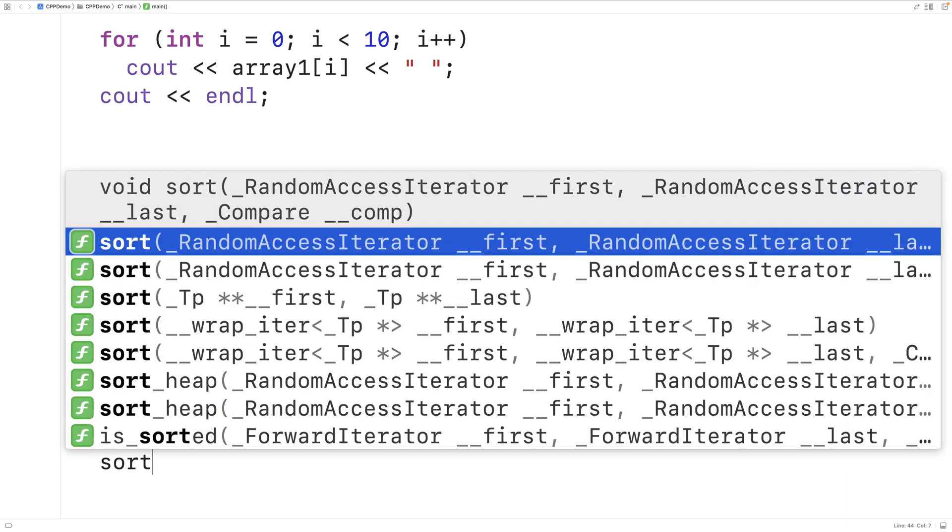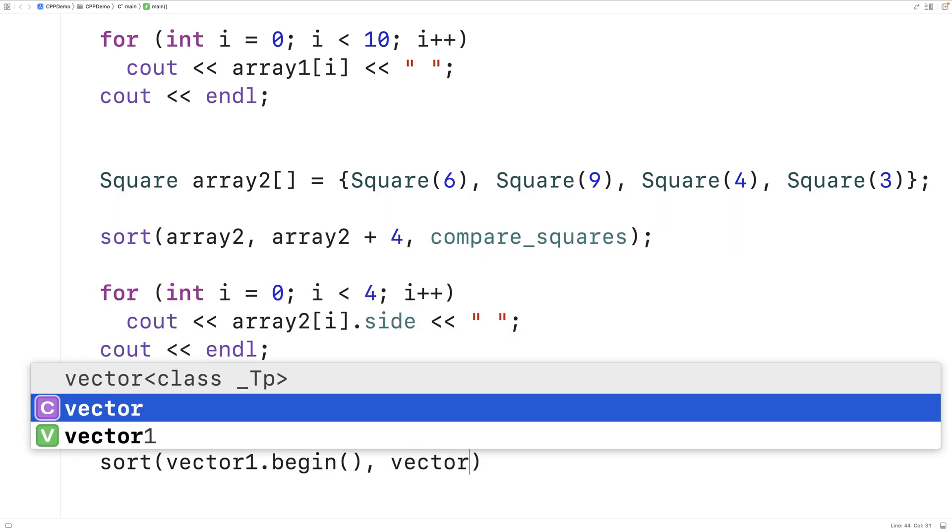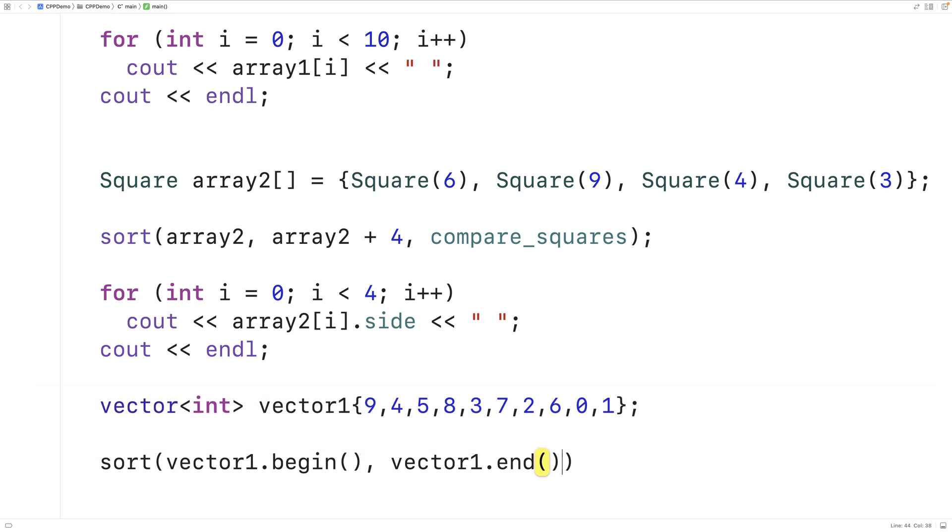And we'll call sort. And we'll call it like this. We'll say vector1 dot begin and vector1 dot end. And so this first argument here and the second argument here, they need to be random access iterators that define a sequence of values.